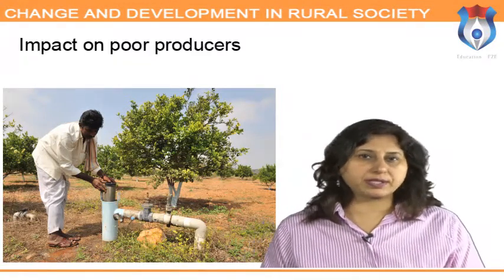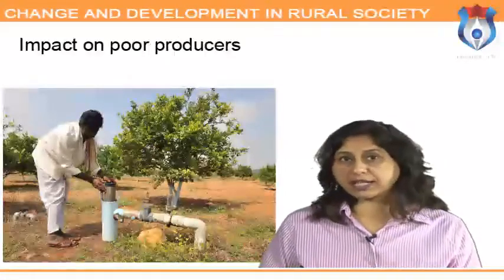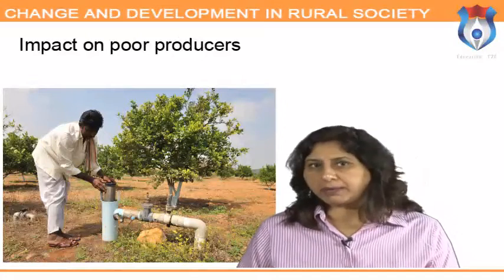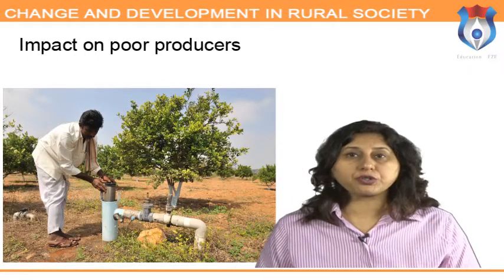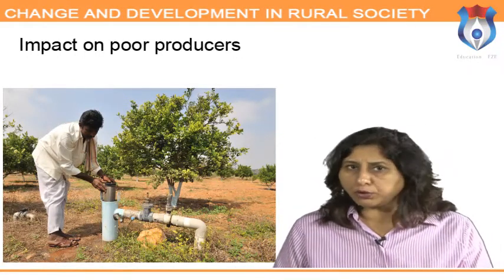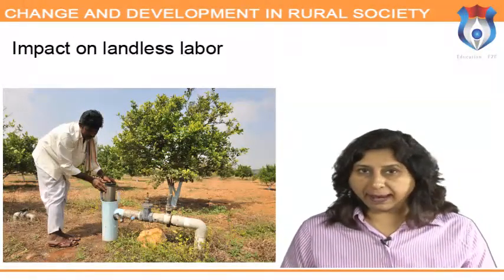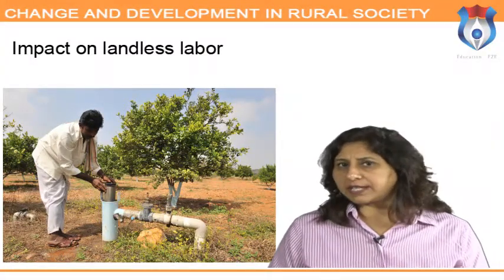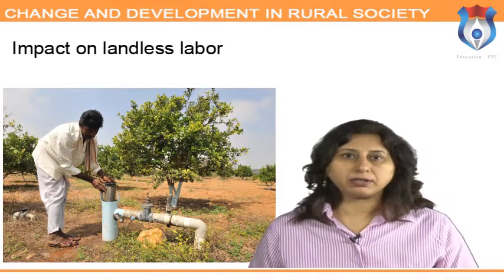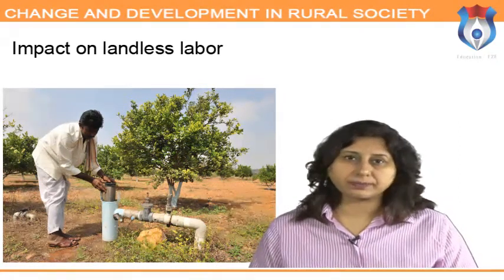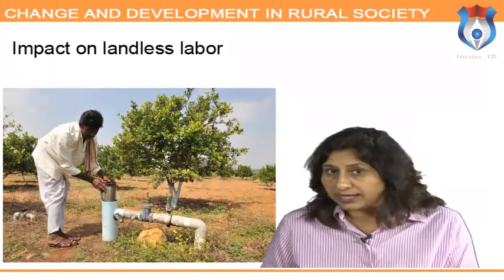Impact of green revolution — impact on poor producers: the adoption of high-yielding variety seeds resulted in an increase in net gain for small farmers as well. The green revolution benefited producers who control optimal production environments or who have access to such environments, irrespective of farm size. Impact on landless labor: the various advances brought by the green revolution increased the demand for labor, which further increased wages. Mechanization has not always resulted in labor reduction, at least not in this case.